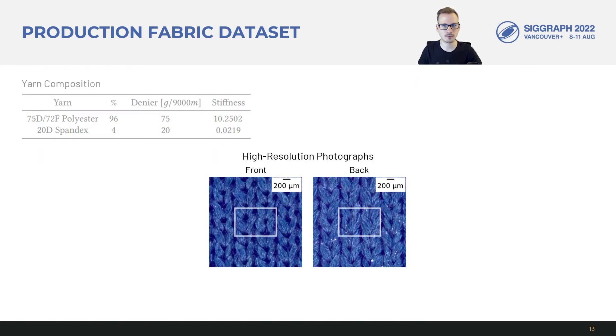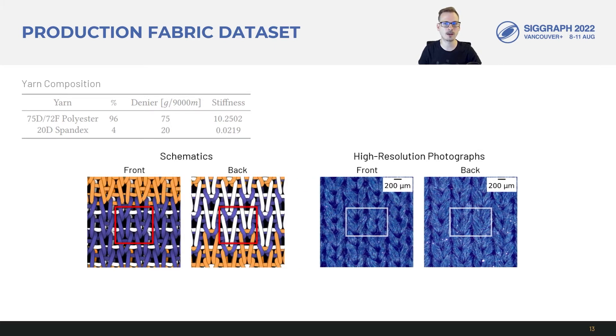Next, we have high-resolution photographs of the front and back of fabrics at rest. In the photos alone, it's difficult to see the exact topology of the yarns, since some of them are partially occluded. So we additionally provide schematic images that depict the pattern topology from the knitting program.